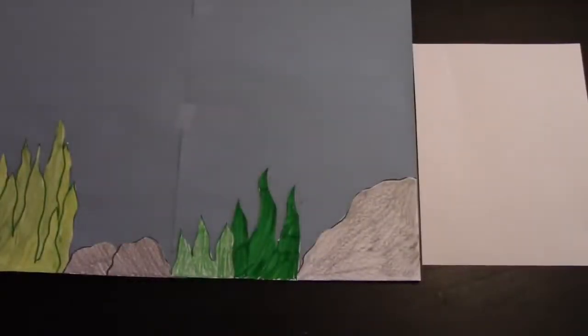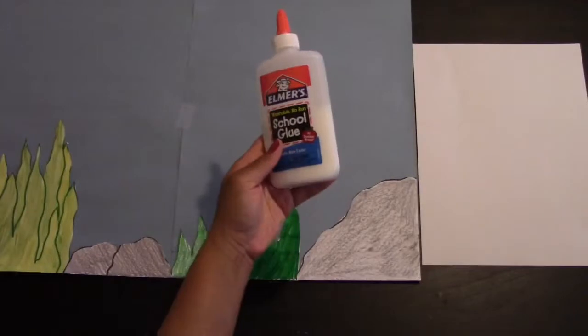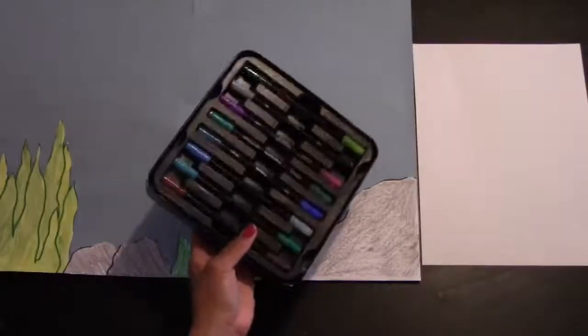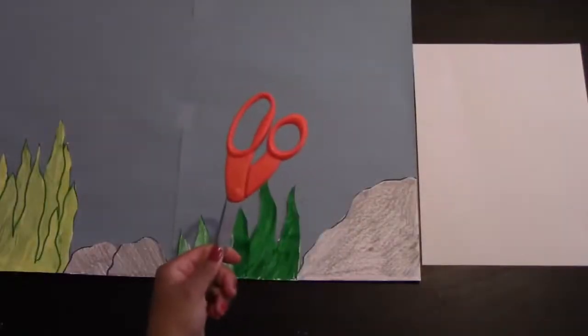You're also going to need glue. It can be hot glue or regular glue, crayons, markers, and scissors that you will use with a parent.